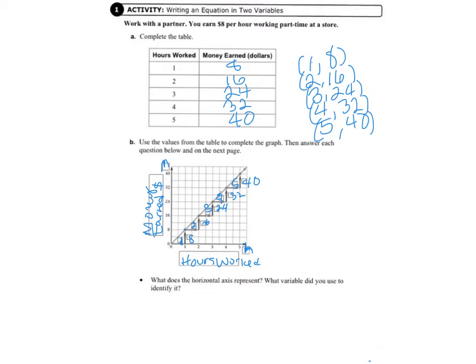Our next question says, what does the horizontal axis represent? So remember the horizontal axis goes sideways. And what variable did you use to identify it? So the horizontal axis represents the hours worked. And we used H to identify it. Please be sure you write that down in your record and practice journal.